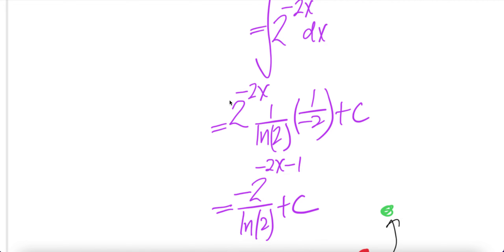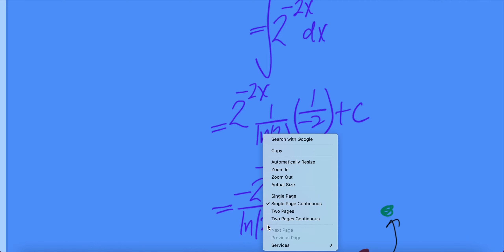Here, negative comes up: 2 to the power of negative 2x minus 1 because of this 2, times 1 over log 2 plus c.